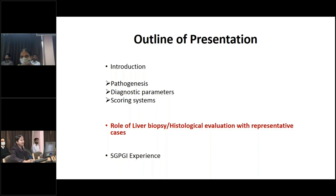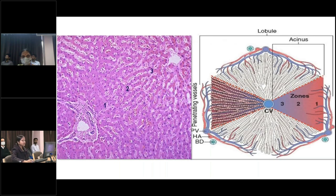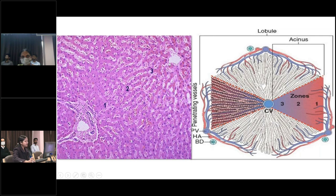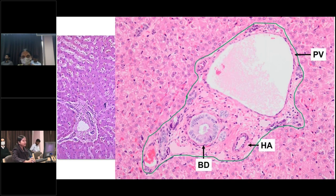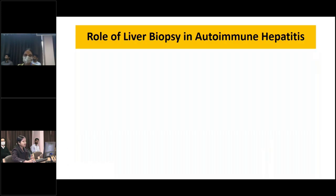The role of liver biopsy is very important to diagnose autoimmune hepatitis. First, we must understand the normal histology of the liver. The liver acinus is bounded by the portal tract at one end and the central vein at the other, with the area divided into three zones. The portal tract shows the portal venule, hepatic arteriole, and accompanying bile duct. The interface between the portal mesenchyme and hepatocytes is called the limiting plate.